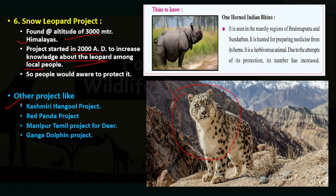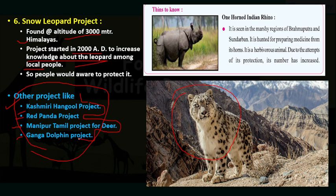Other projects include the Kashmiri Hangul Project, the Red Panda Project, the Manipur Tamul Project for deer, and the Ganga Dolphin Project. You must look these up on Google as examination questions may come from them. Here is the one-horned rhino, found in the regions of Brahmaputra and Sundarbans. Its horn is used to prepare different kinds of medicines. It is a herbivore animal, and due to the protection given to it, its number has increased.